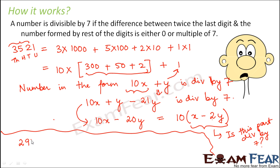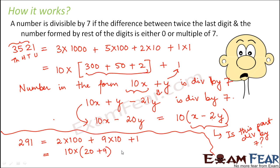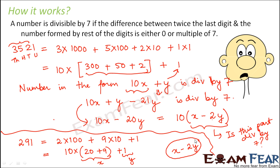Applying this logic to the number 291: we can write it as 10 × 29 + 1, so x = 29 and y = 1. We check if x − 2y = 29 − 2 × 1 = 27 is divisible by 7. Since 27 is not a multiple of 7, the number 291 is not divisible by 7 — consistent with what we found earlier.